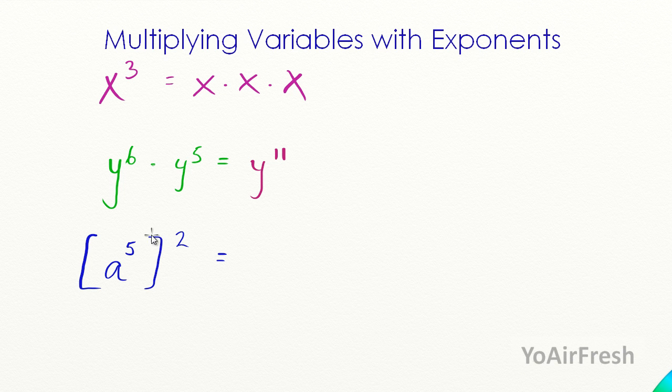Note that this one, this problem here, down here, has parentheses. So this is a to the fifth, two times, which equals, and I'm going to write it out the long way again, a to the fifth times a to the fifth. And now that you know how to do this from these previous problems, you can add these together. And this equals a to the tenth. In the same way that five times two equals ten.